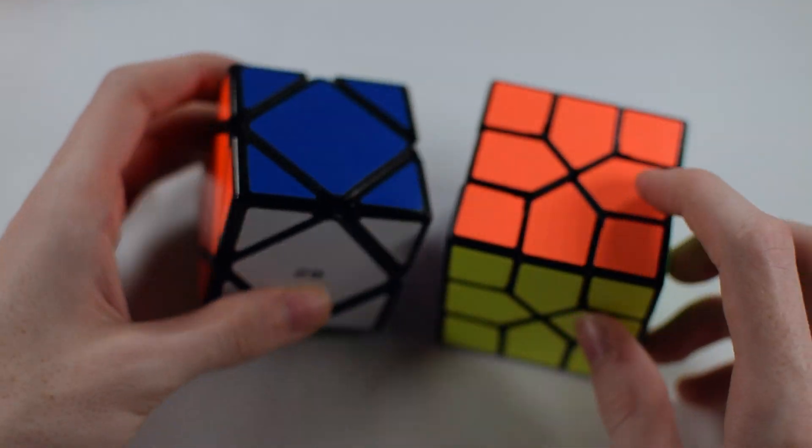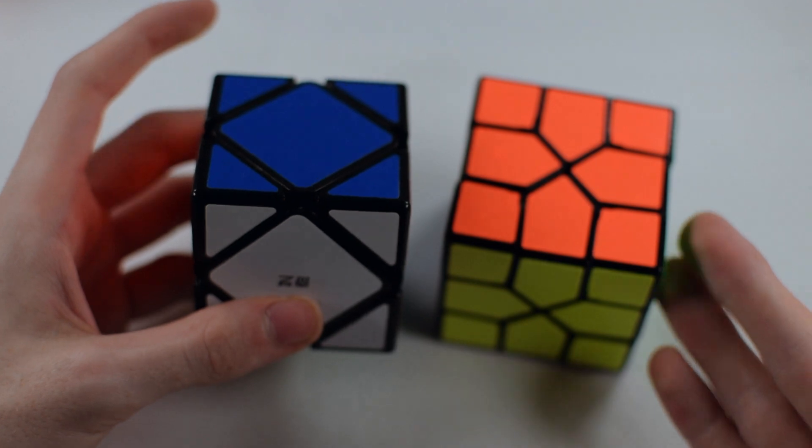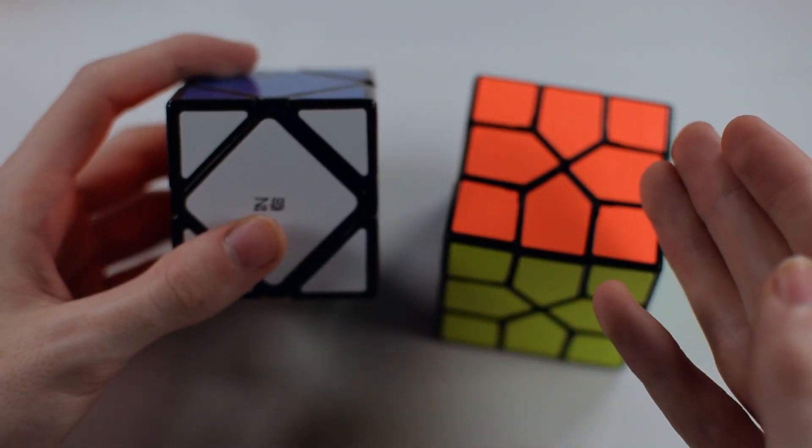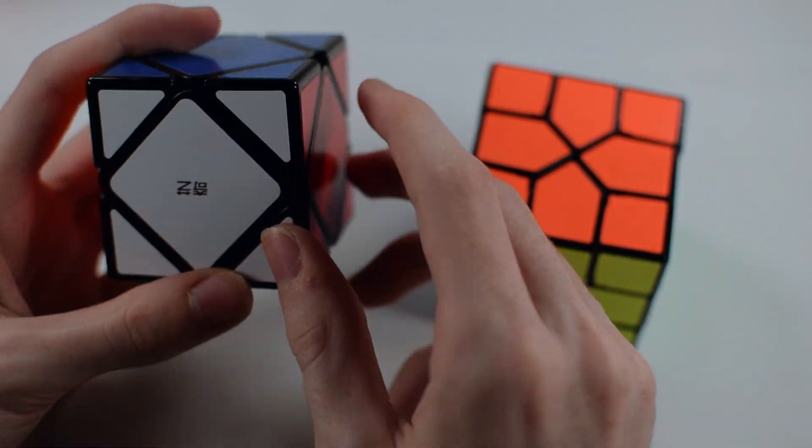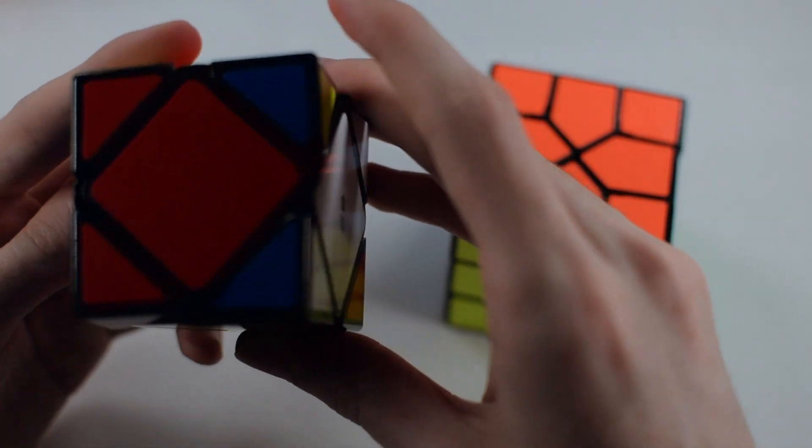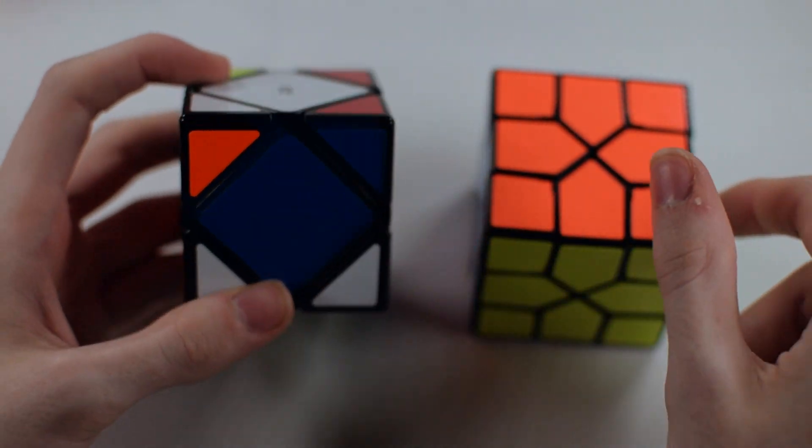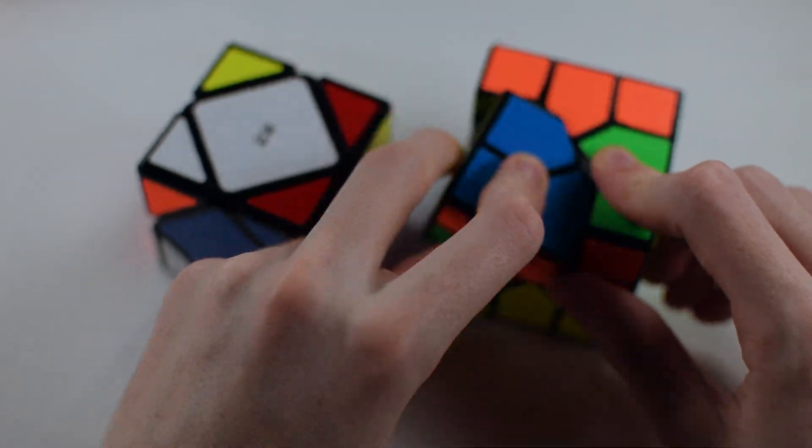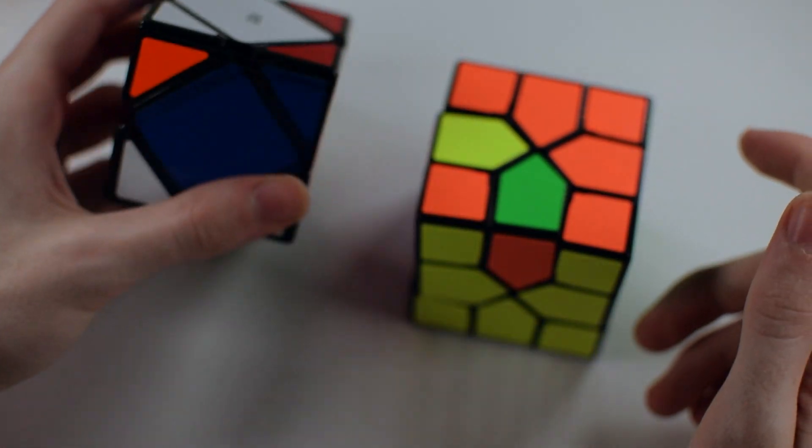But now let's take a look at a different puzzle. Skewb. Now, Skewb is going to work the same way if we look at it to a Redi cube. This is one of the reasons why I want to make use of a Redi cube. Considering this is the right and this is the left. And this makes this is the right and this is the left. So we would go down, down, up, up. The same way we would go down, down, up, up. It works the exact same way.